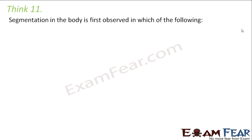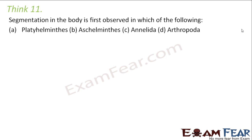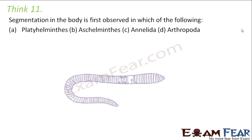Segmentation in the body is first observed in which of the following: platyhelminths, aschelminthes, annelids, or arthropods? Platyhelminths — no segmentation. Aschelminthes — no segmentation. Annelids — segmentation was present. Arthropods — segmentation was also present. But where was it seen for the first time? It was in the annelids, like earthworms.